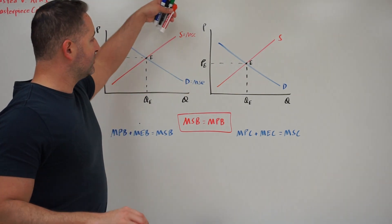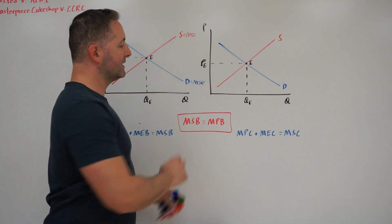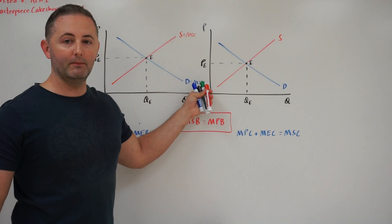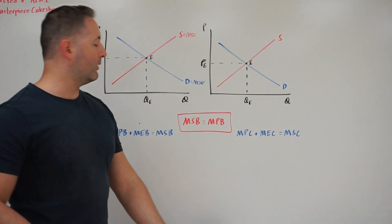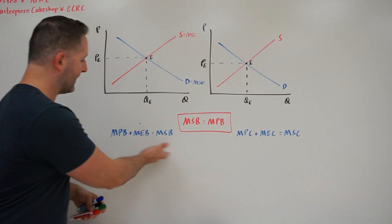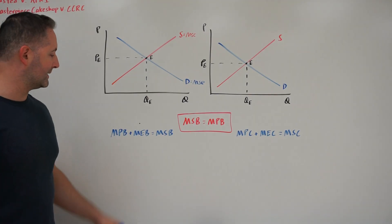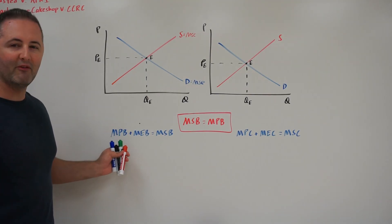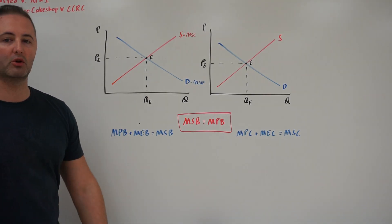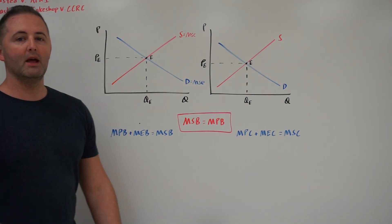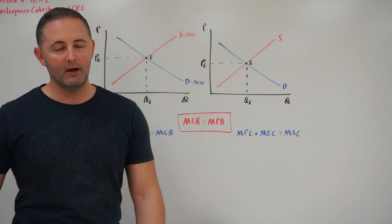So in this case we'd be making the assumption that this demand curve represents the marginal social benefit. Let's define that down here. Marginal private benefit plus marginal external benefit is equal to the marginal social benefit.